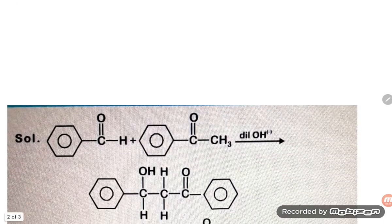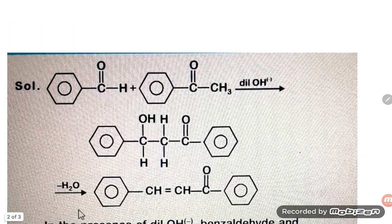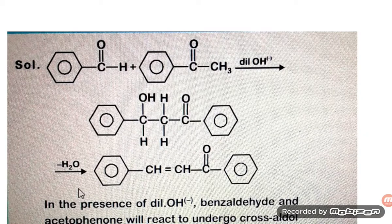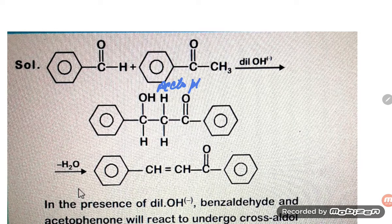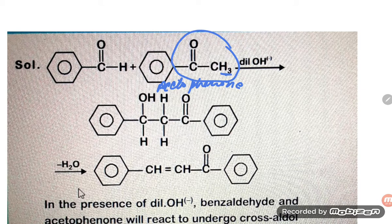Now let us see. Here we can read from the slides. This is the acetophenone. Acetophenone is able to undergo the reaction because it has alpha hydrogen. But here, if you talk about benzaldehyde, there is no alpha hydrogen present.